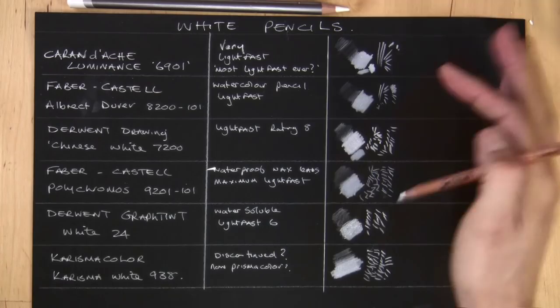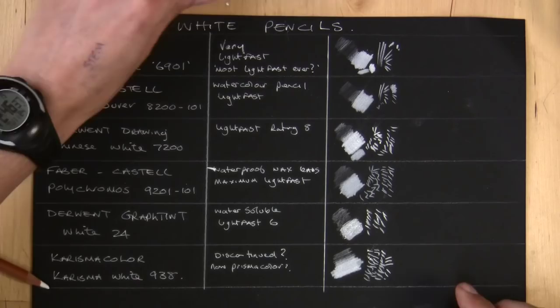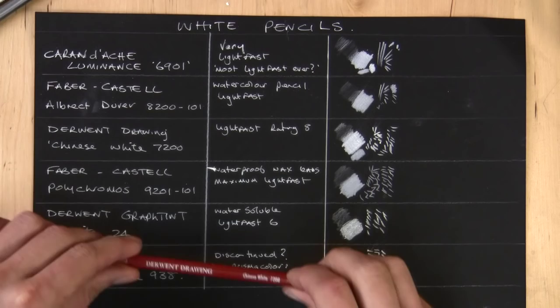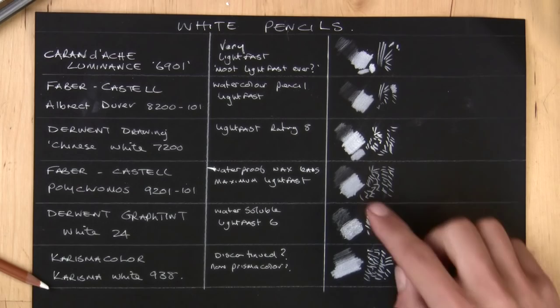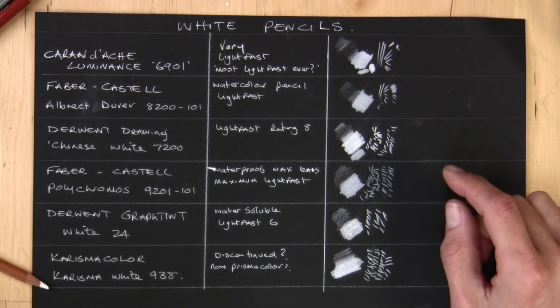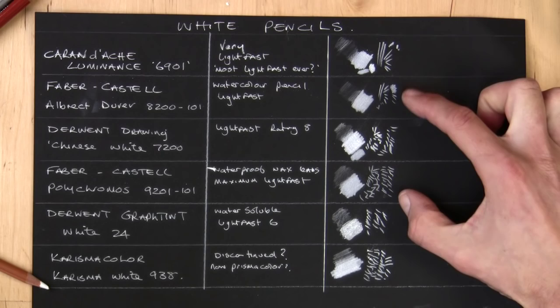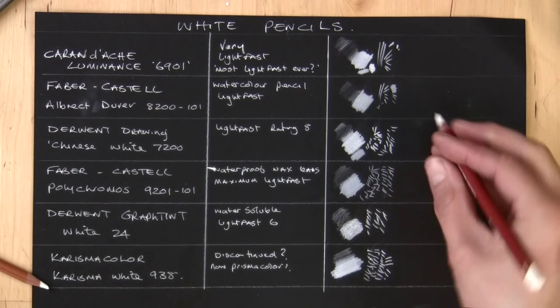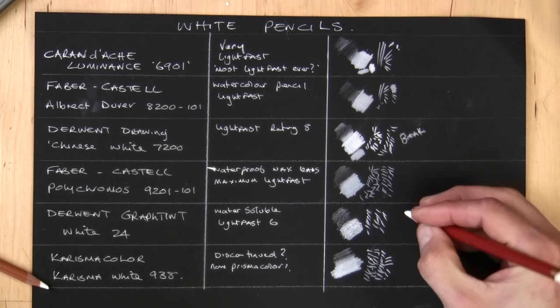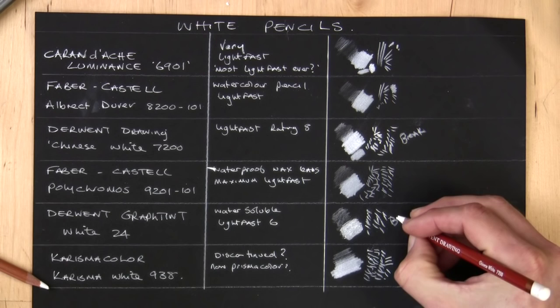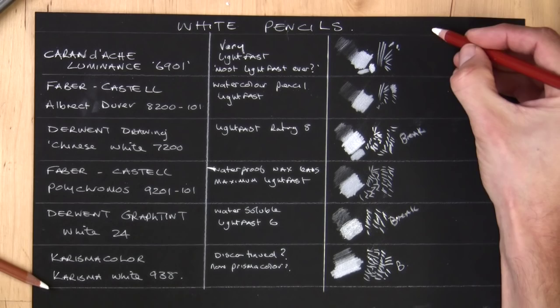So there you go. So the majority, the Luminance, the Derwent, they will pretty much, if you weren't judging them by each other, by the side of each other, they all pretty much give a very similar whiteness. The benefits for me though would be the ones that don't break. So then we're talking Polychromos and the Luminance and this Faber-Castell as well. Whereas the ones that are prone to breaking is this one, that one Derwent, this one which I'm not surprised, this one is prone to breaking probably there as well. So separate those off.